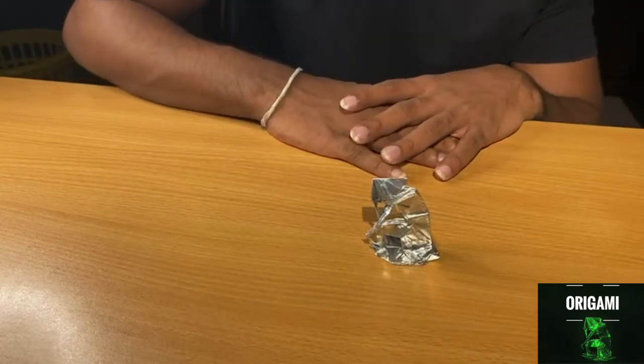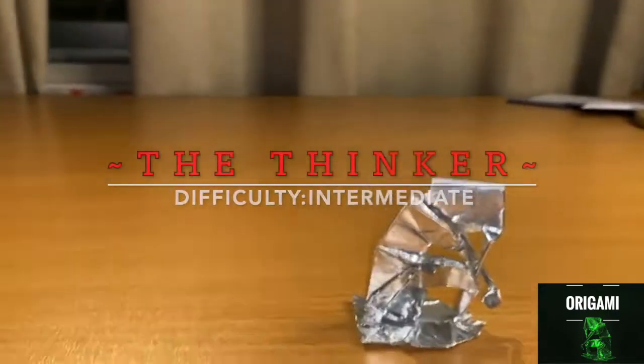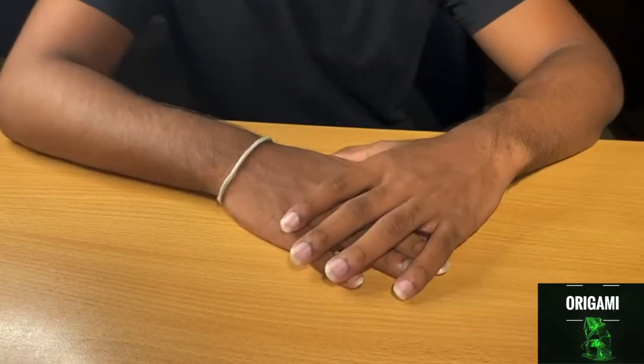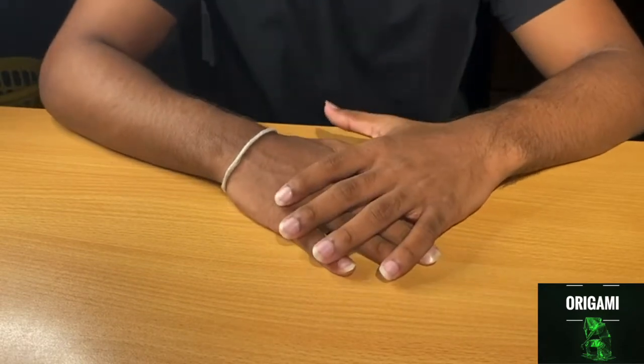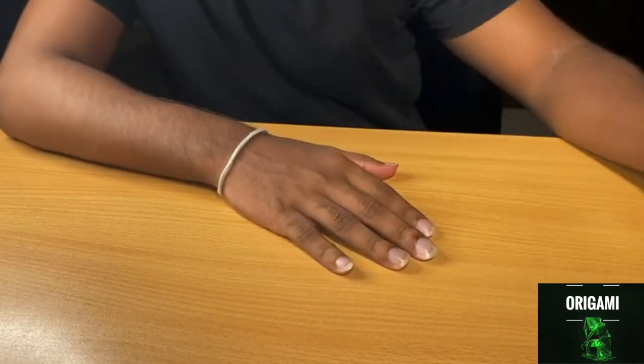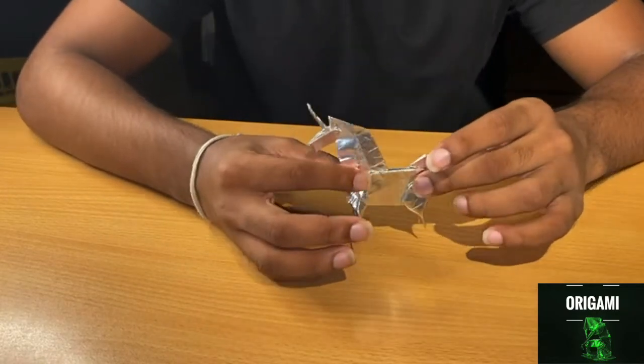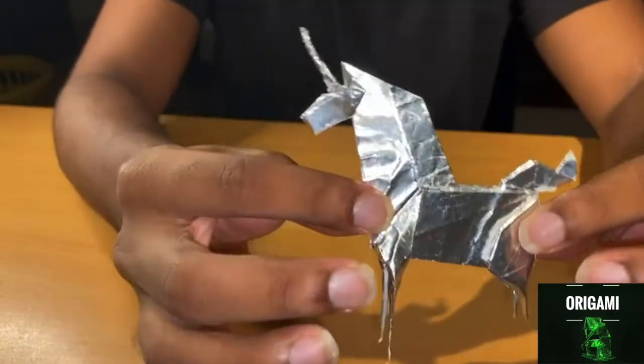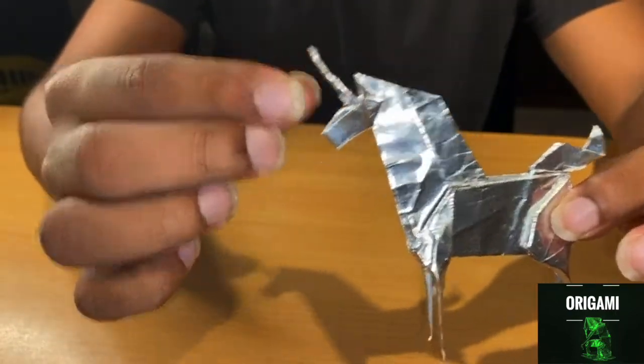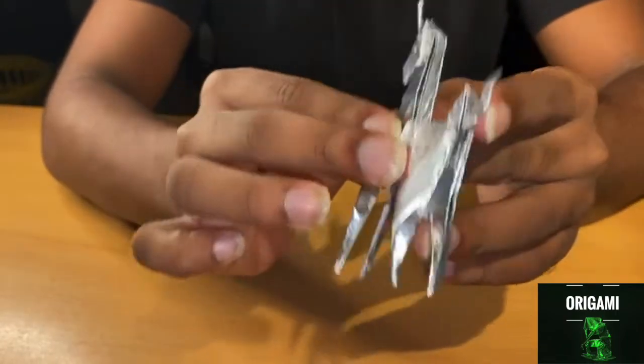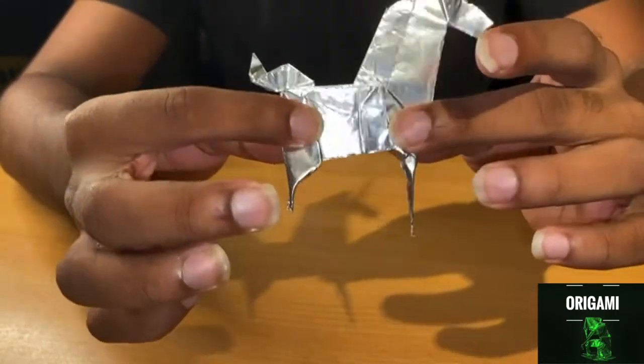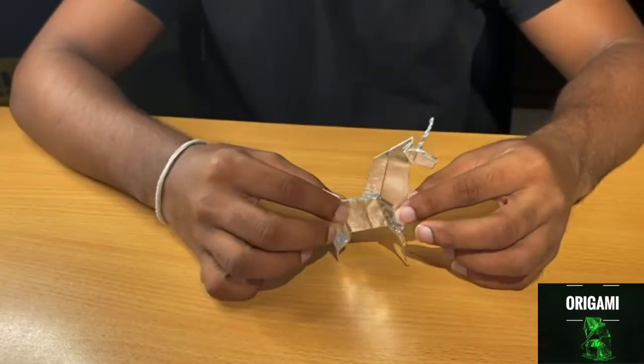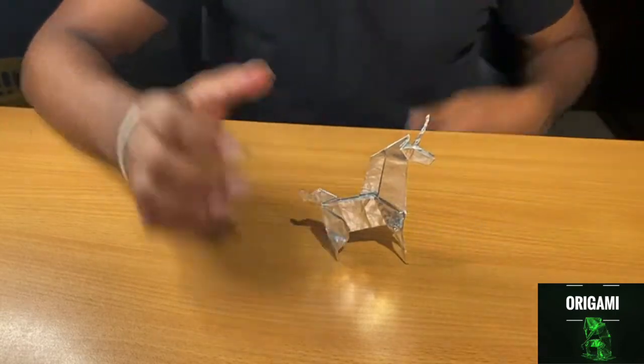Next, the next intermediate model we have is the origami unicorn, which is this one right here. Let me give you a better view. As you can see, it has the horn which is twisted. The details are very fine. It's a bit harder to make but still falls in the intermediate category. Let me get you a better view of this model.